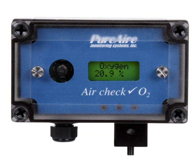Catalytic bead sensors are commonly used to measure combustible gases that present an explosion hazard when concentrations are between the lower explosion limit and upper explosion limit. Active and reference beads containing platinum wire coils are situated on opposite arms of a Wheatstone bridge circuit and electrically heated up to a few hundred degrees C. The active bead contains a catalyst that allows combustible compounds to oxidize, thereby heating the bead even further and changing its electrical resistance. The resulting voltage difference between the active and passive beads is proportional to the concentration of all combustible gases and vapors present.